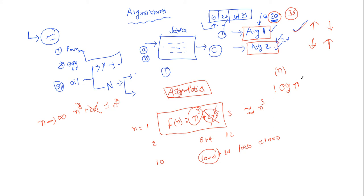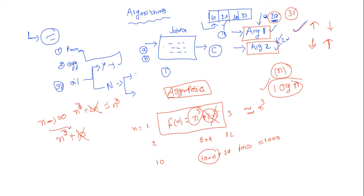For some easy inputs algorithm one may give the result first, and for some inputs algorithm two will. But on average, binary search is the most efficient way to search an element. In asymptotic analysis, constants are ignored — for example, n³ + 10 is nearly equal to n³ for larger inputs, so we ignore the constant 10.